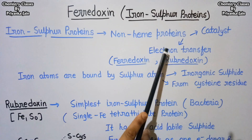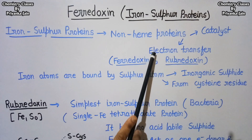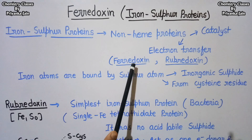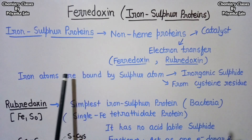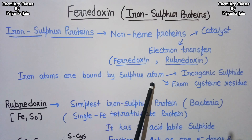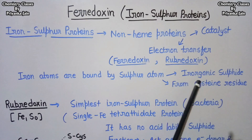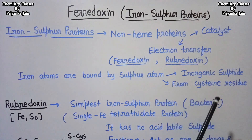Another type are the electron transfer proteins — they are involved in electron transfer reactions, acting as electron carriers or redox centers. Two important examples of such proteins are ferredoxin and rubredoxin. In these types of proteins, the iron atom is bound by sulfur atoms, which are of two types: one is the inorganic sulfide, where the sulfide groups act as bridges between the iron atoms, and another are the sulfur atoms from cysteine residues.